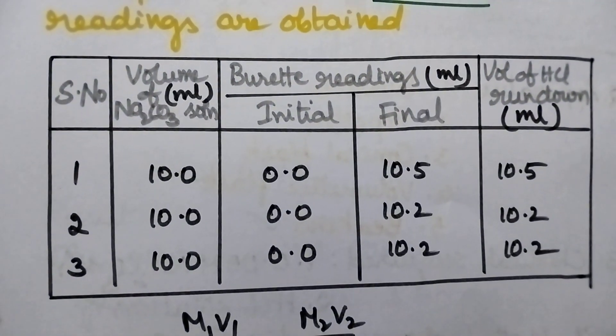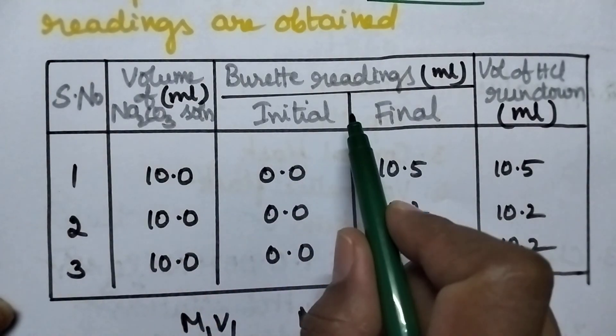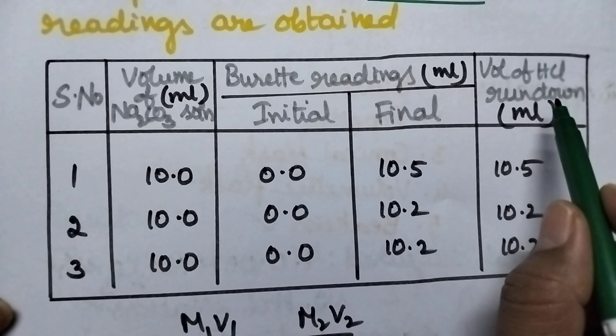Coming to the tabulation of the values, serial number, volume of sodium carbonate solution, buret readings, initial final and volume of HCl rundown.